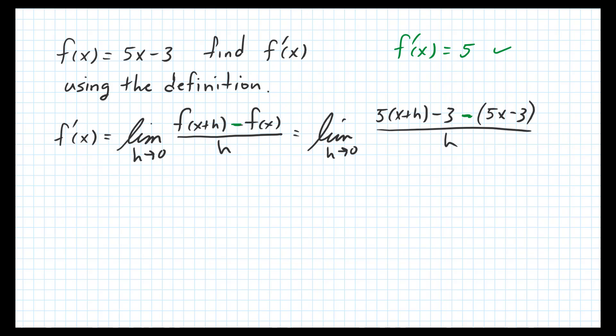And it's that whole quantity over h. Now we can calculate the limit after simplifying this expression using a little bit of algebra. Let's go ahead and distribute the 5, which gives us 5x + 5h - 3.